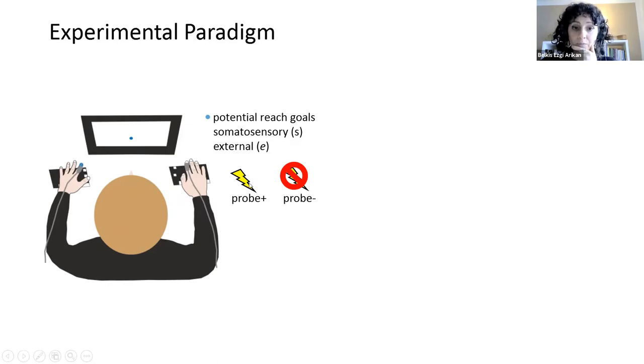So they also received a brief tactile vibration on the to be moved index finger. That was the probe suppression. So we have probe trials. We also have trials without any stimulation. And importantly, we presented the probes right before reaching movement. So this would be the planning phase. And when suppression can be measured without the interference of the movement itself.